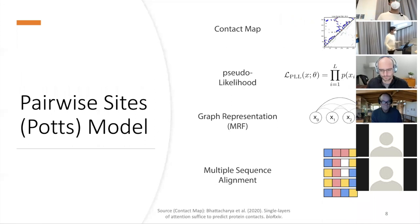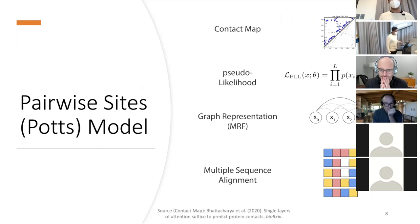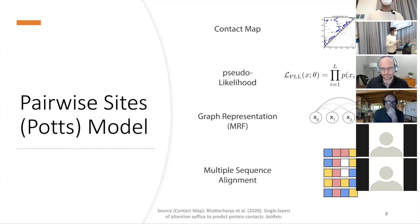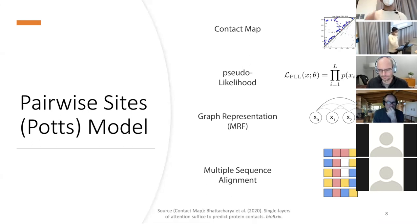Modeling a protein as a set of independent amino acids that don't interact is obviously not how a protein really works. So the next step is to learn about interactions between amino acids, maybe with an eye towards learning the actual 3D structure of the protein. That's where a pairwise sites model — what I'll call a POTTS model — comes into play.